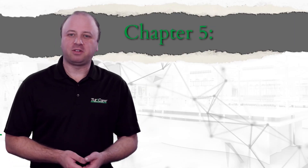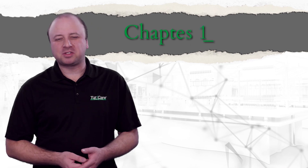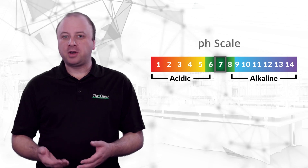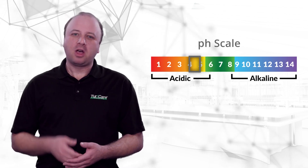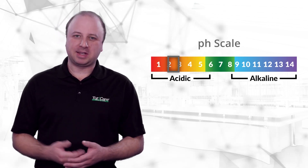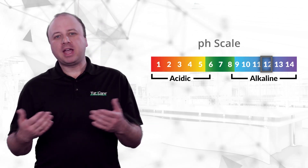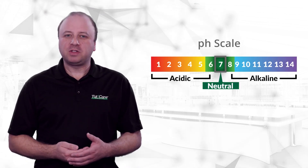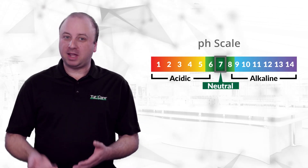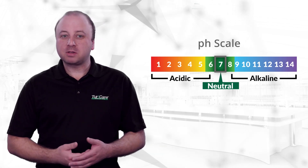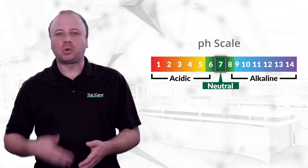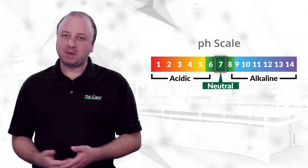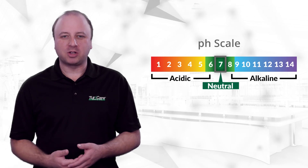pH is a logarithmic scale used to measure the acidity or alkalinity of a chemistry in solution. The pH scale runs from 1 on the acidic end all the way to 14 on the basic end. A pH of 7 is considered neutral. Every dissolved chemistry in the universe has a pH, and every living organism has cells or metabolic systems that function best at certain pH ranges.